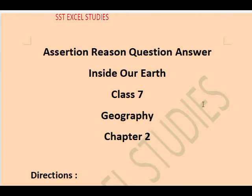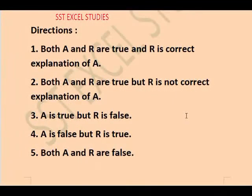First, we are going to discuss the directions and the options that are given in Assertion Reason Question Answers. First option: both A and R are true and R is the correct explanation. Here, A stands for Assertion and R stands for Reason. Next, both A and R are true but R is not correct. Next, A is true but R is false. Next, A is false but R is true. And last, both A and R are false. There are 5 options given and the right option is selected according to the statements.